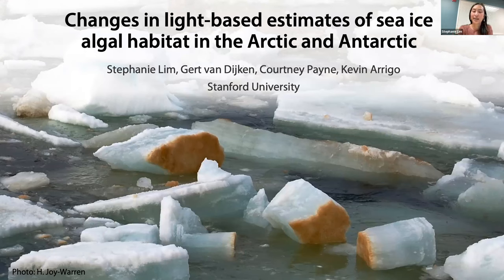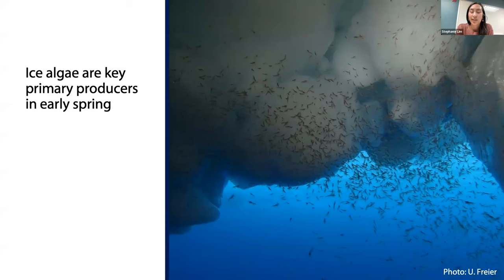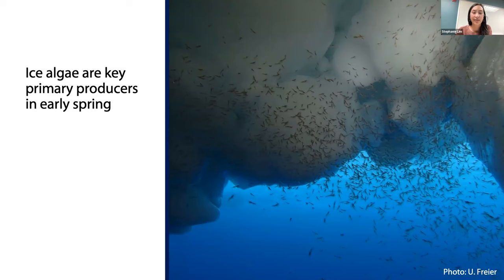Sea ice algae are single-celled microalgae that live attached to or in sea ice, usually concentrated in the bottom few centimeters — seen as a rich brown layer at the bottom of ice floes. This location is optimal for access to both light and nutrients. Today I'll show how we've used satellite and model products of sea ice to get large-scale estimates of ice algal habitat. Ice algae are a small proportion of overall primary production but can be up to 24% in the Antarctic sea ice zone and up to 40% in the central Arctic basin, and they're the first primary producers to bloom after polar night.